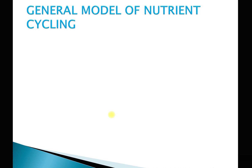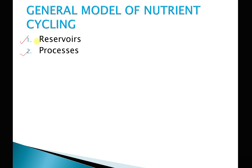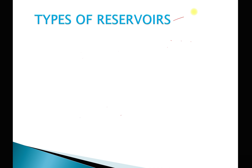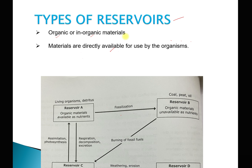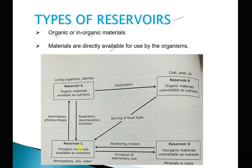There is a general model of nutrient cycle, applicable to all nutrients. According to the model, there should be reservoirs and processes which lead to the cycling of nutrients. Reservoirs are classified according to their nature — whether they are organic or inorganic, and whether they are available or unavailable for use by organisms. In this figure there are four types of reservoirs: A, B, C, and D. Type A reservoirs are organic in nature and available as nutrients. Examples are living organisms and detritus — detritus meaning dead organisms, dead plants, animals, or microorganisms.